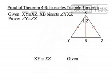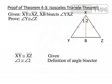So let's start off with a piece of our given information, and that's that segment XY is congruent to segment XZ. And since segment XB bisects angle YXZ, by the definition of the angle bisector, we can say that angle 1 is congruent to angle 2.